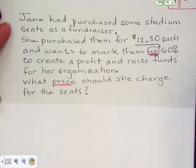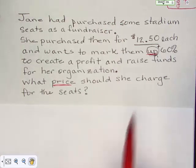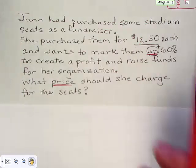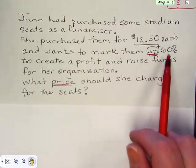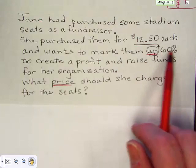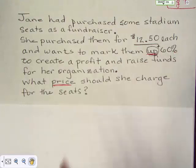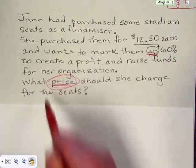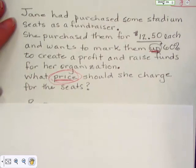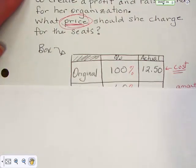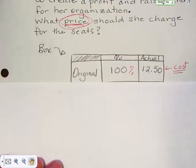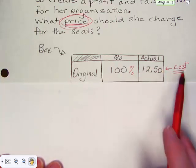Hmm. Well we know for sure that they cost twelve fifty. We know that they're going to be marked up plus sixty percent. We need to know the price she's going to sell them, the new price she's going to sell them for. So let's set it up. We've got the original price was at a hundred percent was twelve fifty. That was the cost.